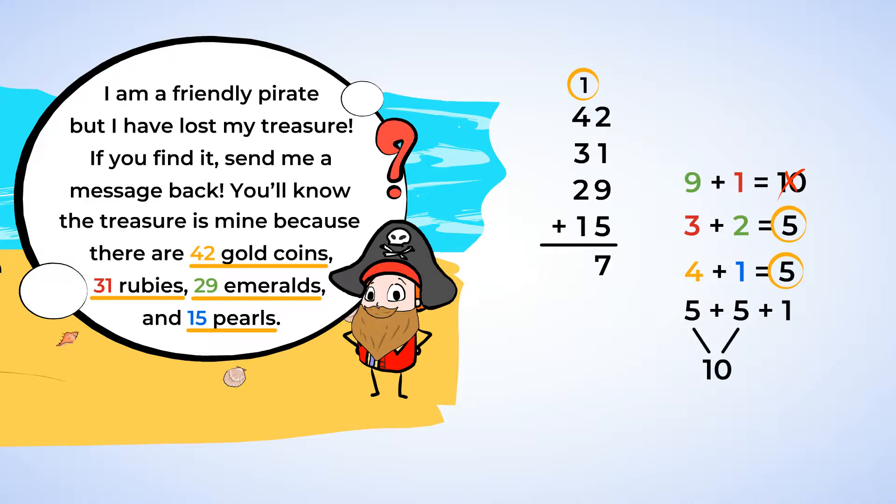5 plus 5 is 10, and 10 plus 1 is 11. By putting an 11 in the tens place, we are actually putting a 1 in the hundreds place and a 1 in the tens place. Look at the number we have ended with. 117.